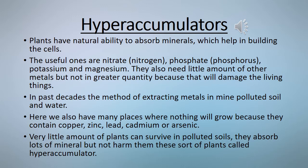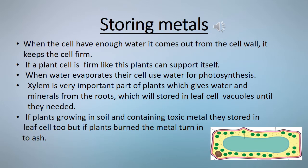How can hyper accumulators be used to remove metal from soil? To remove metal from soil: grow hyper accumulators, harvest the plants and burn them to trap the metals in a small amount of ash, then repeat until the soil is clean.